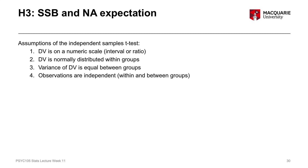Moving on to number three here, this is the relationship between somatic symptom burden and negative affect expectation — whether people with a high somatic symptom burden had worse expectations of negative affect compared to those with a low somatic symptom burden. The analysis we're going to use for this particular test is our independent samples t-test, and we've got four assumptions for our independent samples t-test.